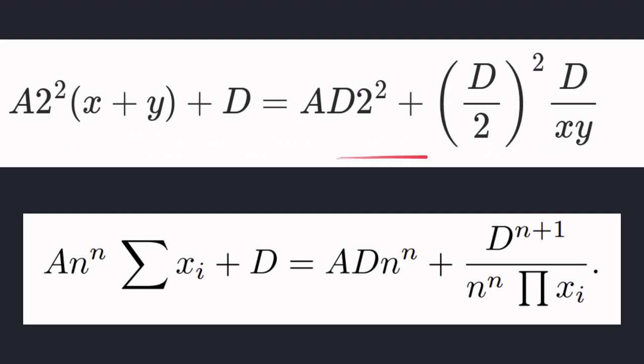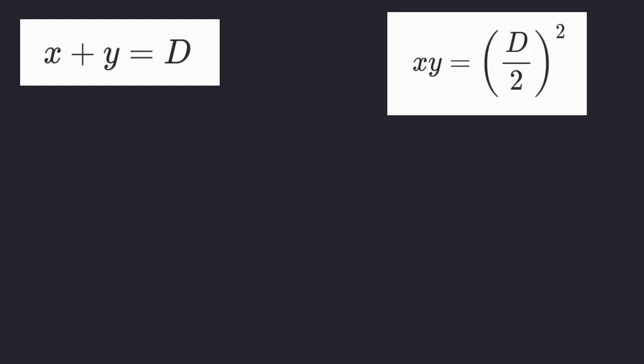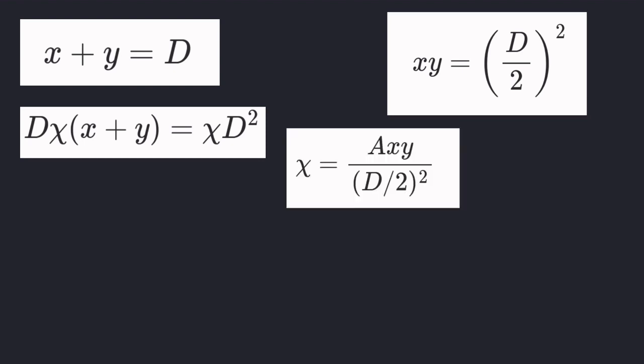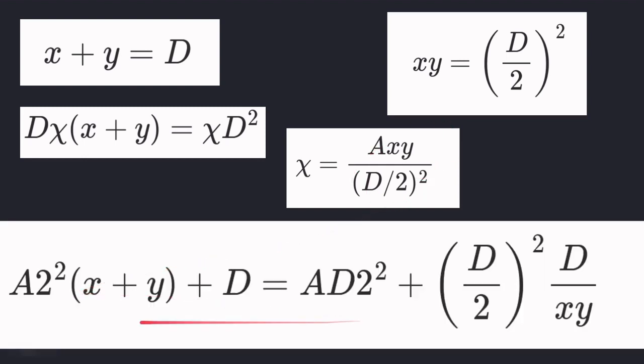So let's now summarize how we got here. We started off with some constraints. x plus y equals d, and x times y equals d over 2 to the power of 2. And then we said we wanted to amplify the effect of x plus y equals d. So we multiply by chi. And we also wanted to normalize x plus y by d. So we multiply d on both sides of the equation. As mentioned in the curve white paper, we set chi equal to this variable. And we get this equation.